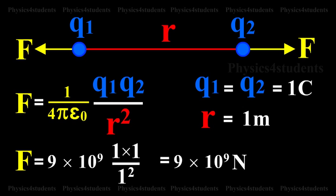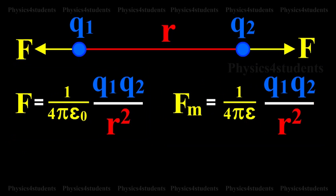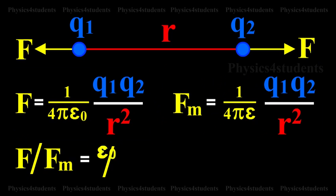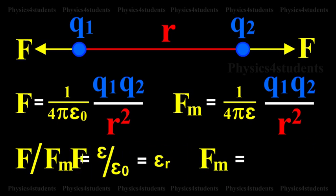If the charges are situated in a medium of permittivity epsilon, then the magnitude of the force between them will be Fm is equal to 1 by 4 pi epsilon into Q1 Q2 by r squared. Dividing equation 1 by 2, F by Fm is equal to epsilon by epsilon 0, that is equal to epsilon r. The ratio of epsilon divided by epsilon 0, called epsilon r, is called the relative permittivity or dielectric constant of the medium. The value of epsilon r for air or vacuum is 1. Epsilon is equal to epsilon 0 into epsilon r. Since Fm is equal to F divided by epsilon r, the force between two point charges depends on the nature of the medium in which the two charges are situated.